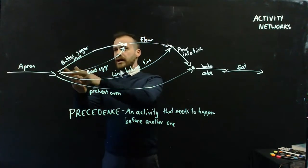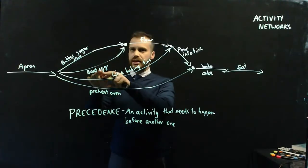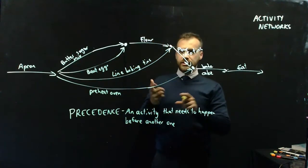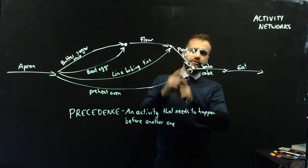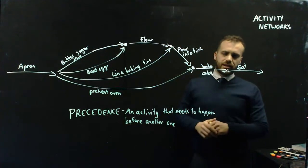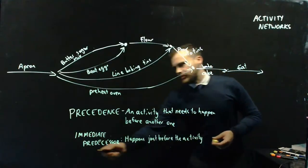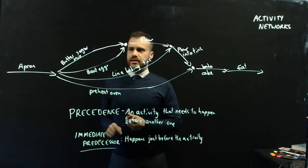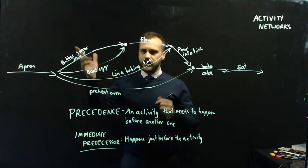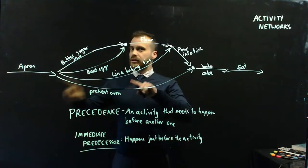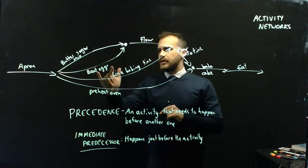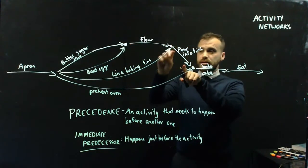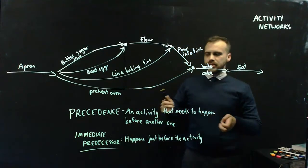Butter, sugar, mixing the butter and the sugar, and beating the eggs both have precedence over adding the flour. Adding the flour has precedence over pouring into tins, and so does lining the baking tins. All of those things have precedence over baking the cake and eating. That leads us to something called an immediate predecessor, and that happens just before an activity. Each of these is an activity. Apron is an immediate predecessor to butter, sugar mix. Apron is a predecessor to flour, but it is not an immediate predecessor. Butter, sugar mix and beat eggs are both immediate predecessors to flour. Pour into tins has two immediate predecessors, flour and lined baking tins.